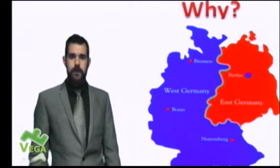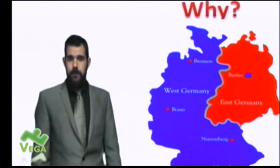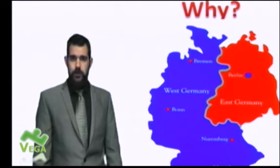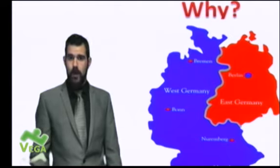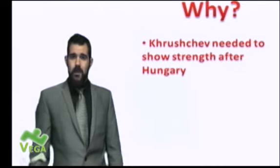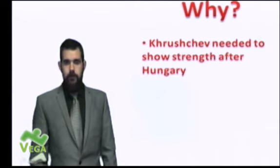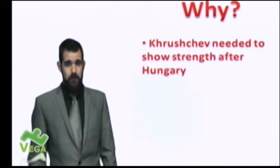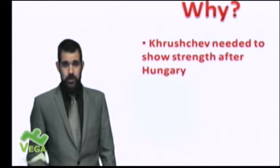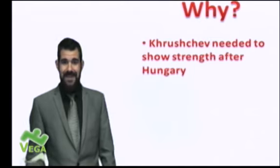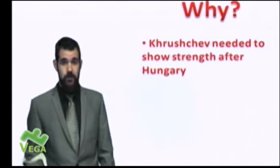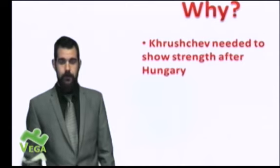Berlin is a city divided into four zones, so there is an American section in Berlin surrounded by Soviet territory. This is a problem. Firstly, Khrushchev needs to show his strength — you might remember the 1956 Hungarian uprising, and he's had problems in Poland as well. He needs to show the Russian government that he is a strong man, and he can squeeze on Berlin to make that happen.